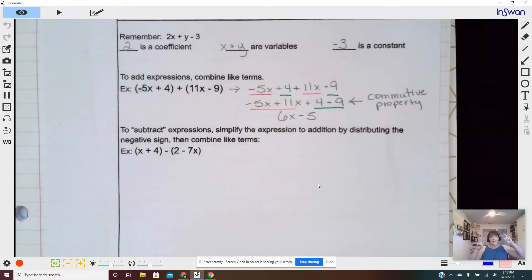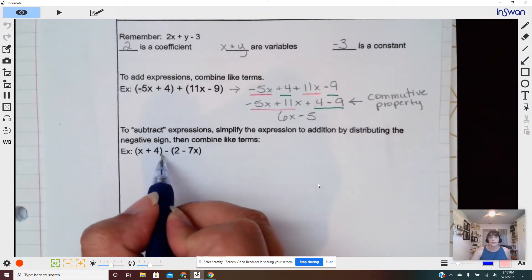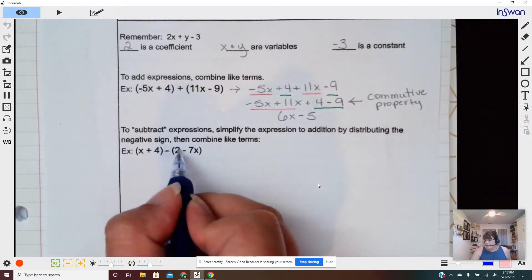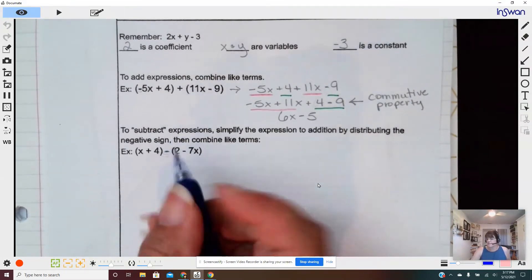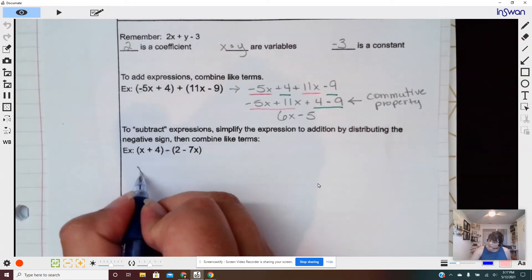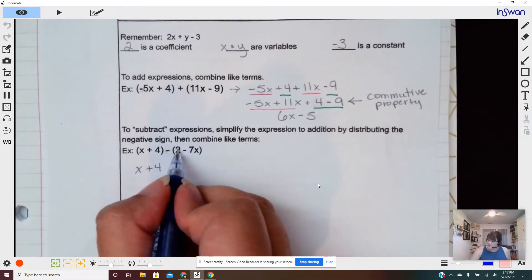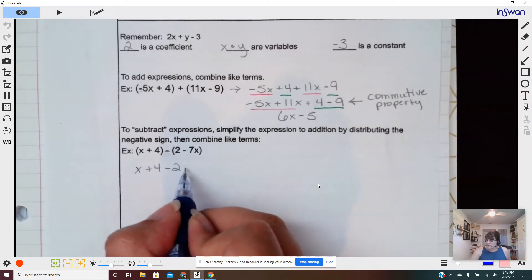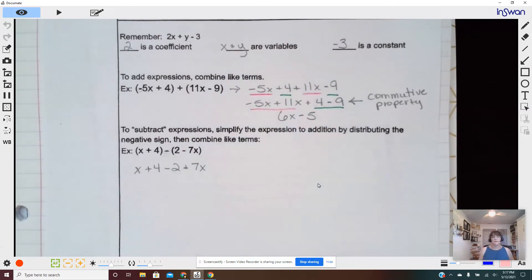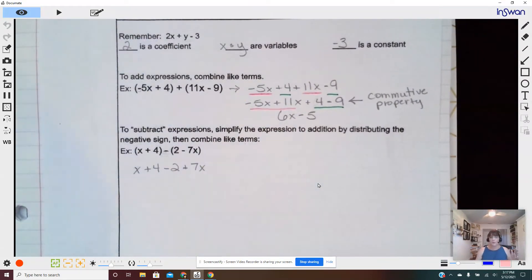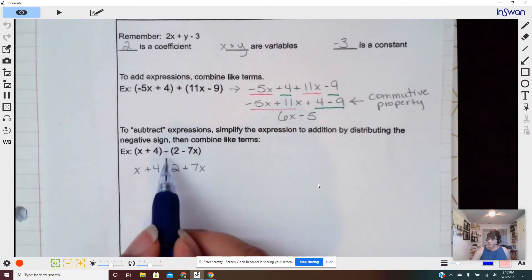To quote unquote, subtract expressions. First, we're going to distribute this negative symbol. Anytime you have a negative sign in front of parentheses, it affects everything inside the parentheses. It's saying the opposite of this and the opposite of that. So I'm going to copy this down, x plus four. Well, the opposite of two is negative two. The opposite of negative seven x is positive seven x. So now I simplified this just by removing parentheses and distributing that negative sign.